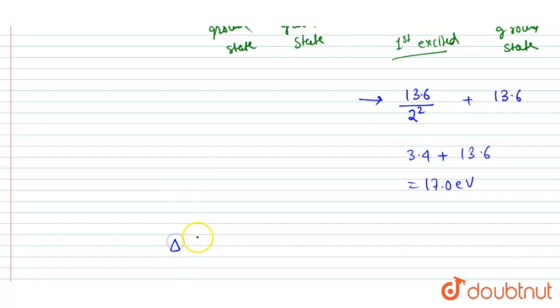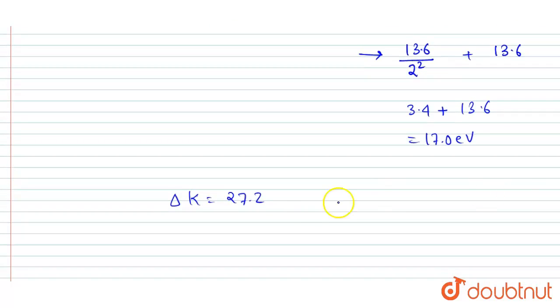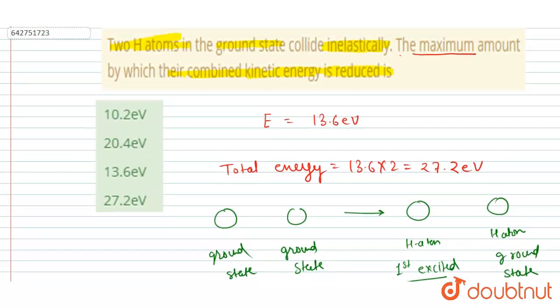Now you could see the reduction is what? The change in kinetic energy is what? Already we have seen earlier it was 27.2, and now it is 17.0. So this will be the maximum reduction in the kinetic energy that could occur here. And you could see here option A is the correct option.